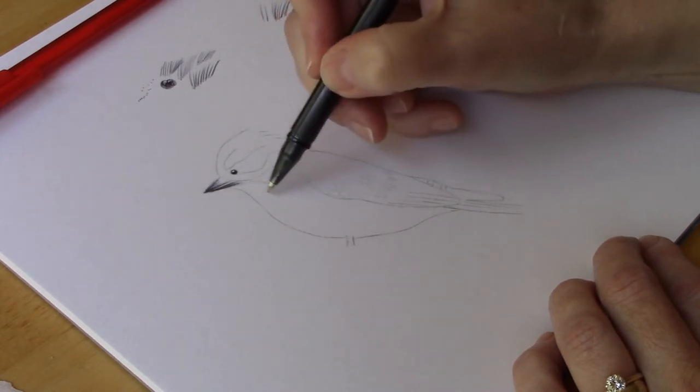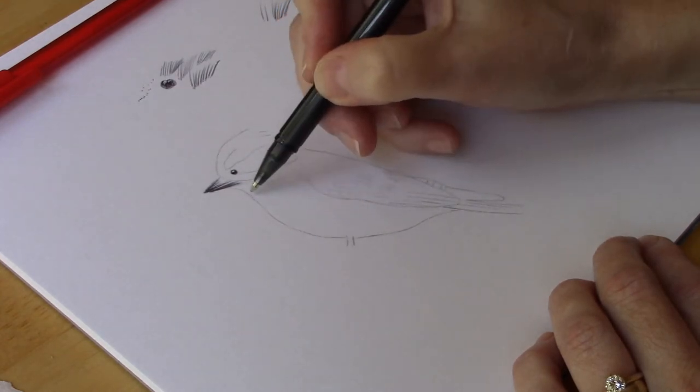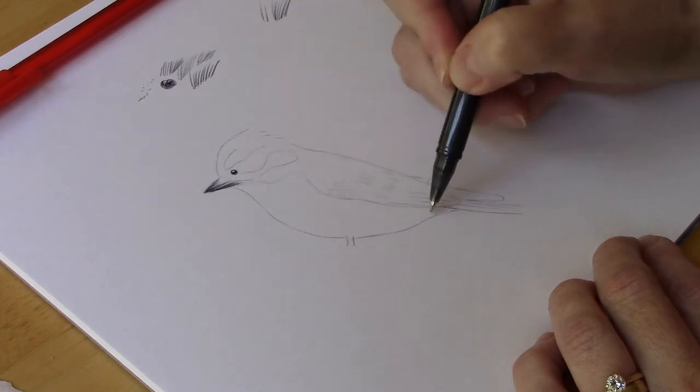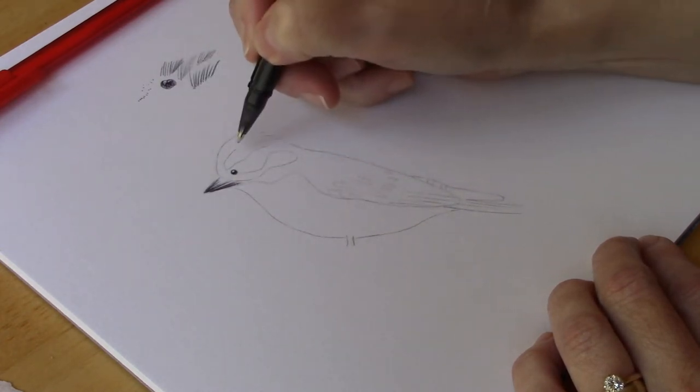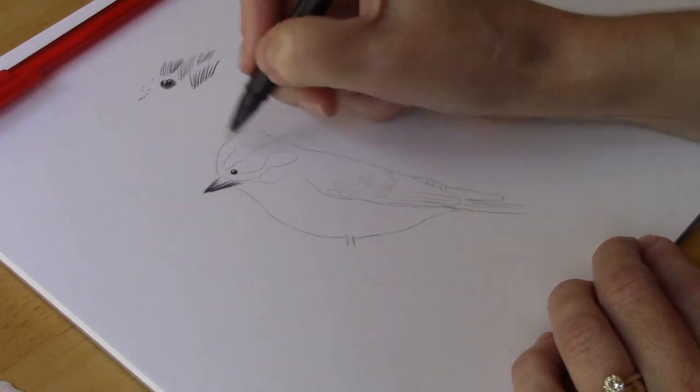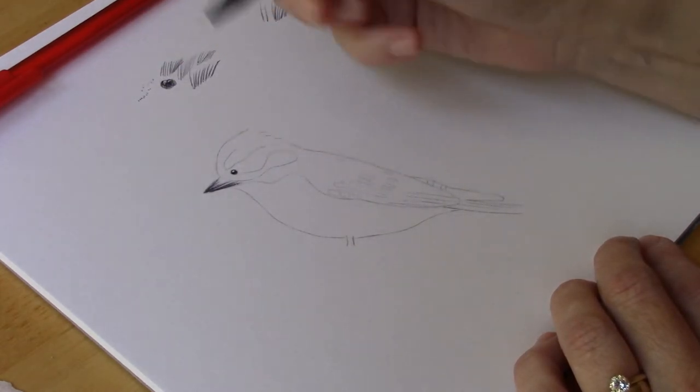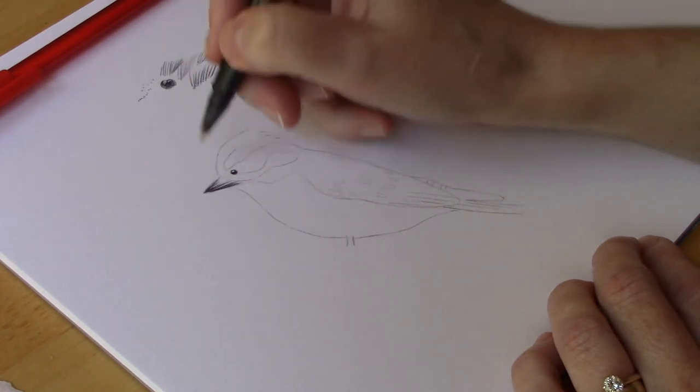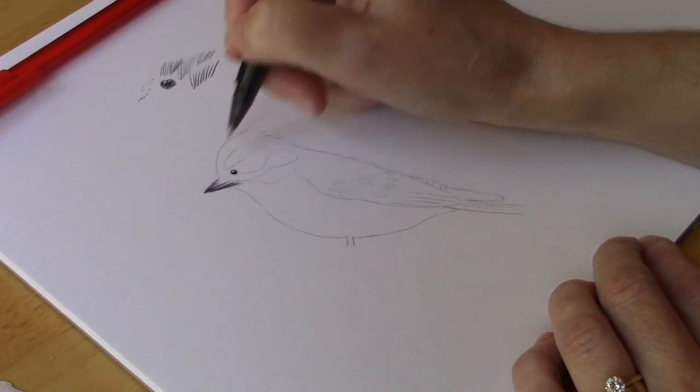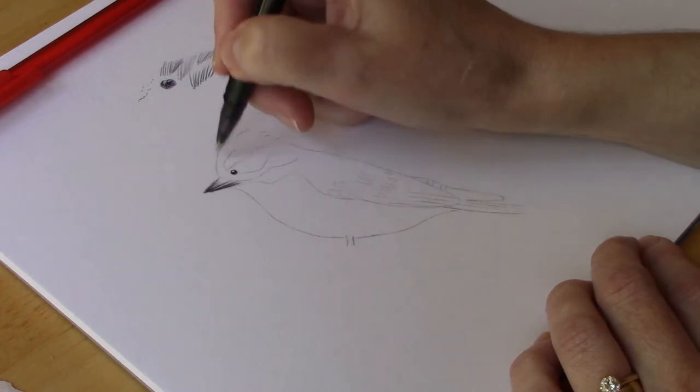And then when we get down here in his chest, they're going to go from his beak downward. Same thing on his wings. They're going to go from kind of the top of his head down. This just helps reinforce the form of the bird and keeps it looking a little more realistic.